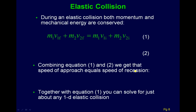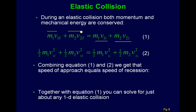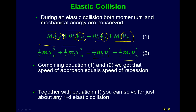For elastic collisions between two objects, we have two equations. We can conserve momentum as before. Additionally, in an elastic collision, we can also conserve kinetic energy in a similar manner. With two equations and two unknowns — the two final velocities — we can solve for both final velocities knowing only the two initial velocities. No information about final velocities is needed if the collision is elastic.